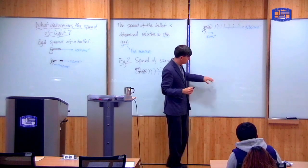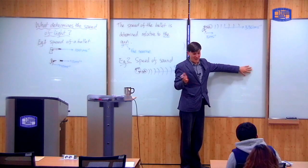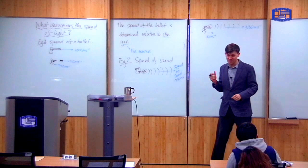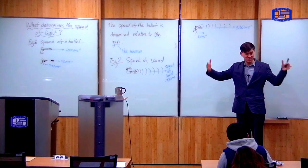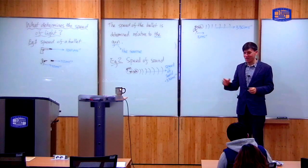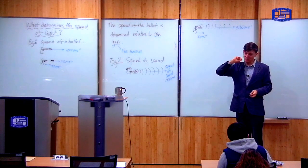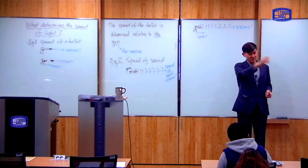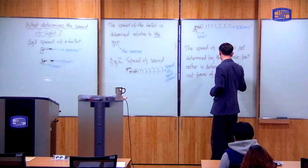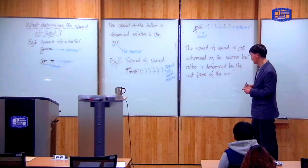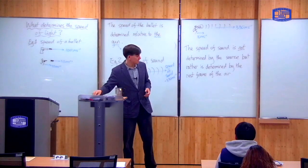So the speed of sound is not determined by the speed of the source. It's different from the case of bullets. In this case, what's the speed of sound determined by? The air. So the speed of sound is determined by the air. In particular, the frame in which the air is stationary. So the air in this room is stationary. Therefore, sound travels with an equal speed in all directions.